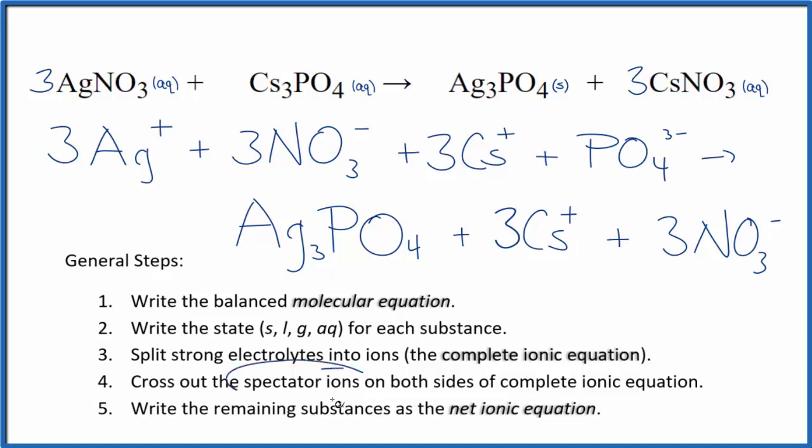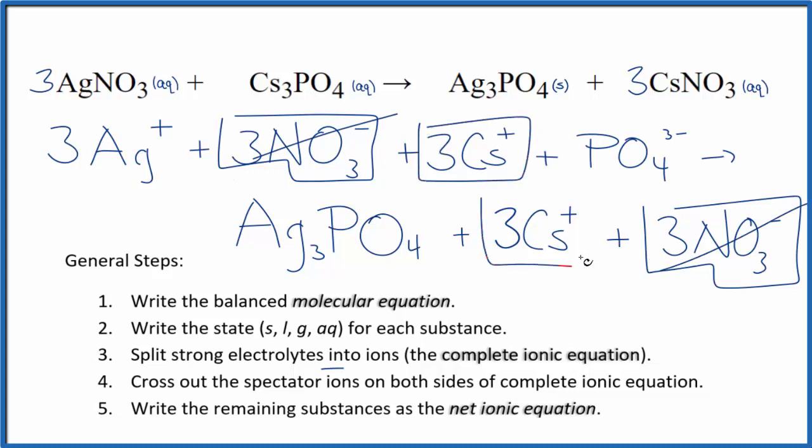So now we can cross out spectator ions. They're on both sides of the complete ionic equation. In the reactants right here, I see there are three nitrate ions. And then in the products down here, again, three nitrate ions. These are spectator ions. We can cross these out. Three of these cesium ions, three down here in the products. Cross those out.